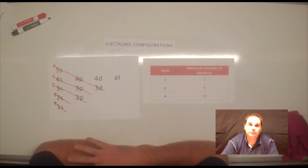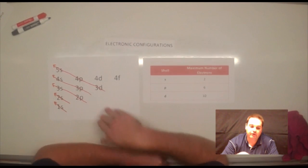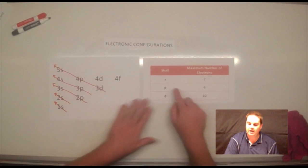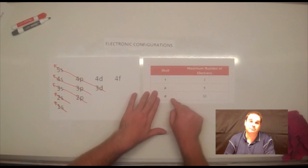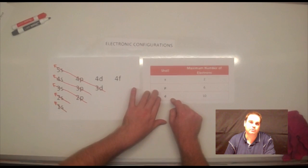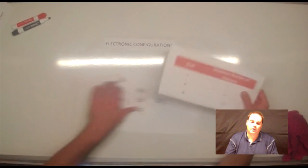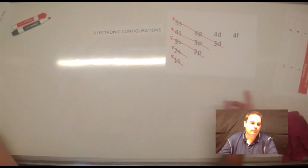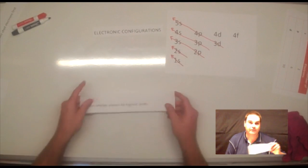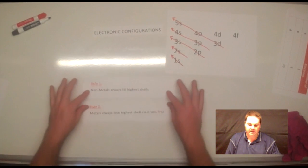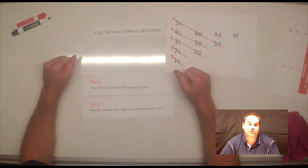This video is around electronic configurations and I'm going to focus purely on the transition metals. In the last video, I went through writing your electronic configurations using subshell notation, using this chart and the number of electrons here. Make sure you've got that down pat before you start the transition metals. We looked at rules where non-metals, when they form ions, fill their highest shells and metals always lose the highest shell electrons first.